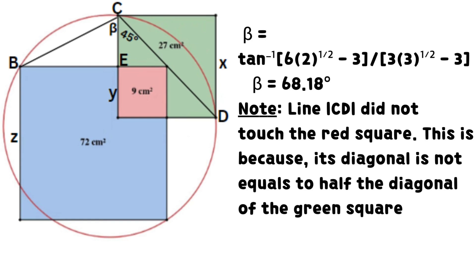You should note that line CD does not touch the red square. This is because its diagonal is not equal to half the diagonal of the green square.